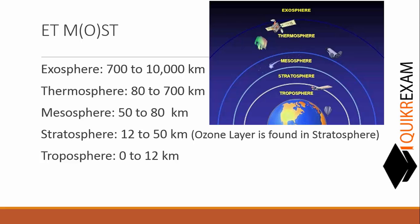Then M, Mesosphere, which is 50 to 80 km away from Earth's surface. Skip the O word. Then S, Stratosphere, which is 12 to 50 km away from Earth's surface.